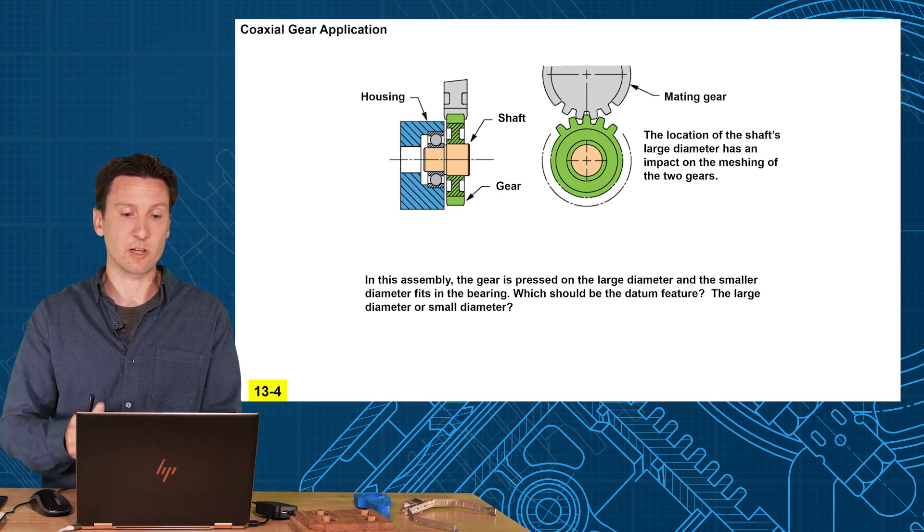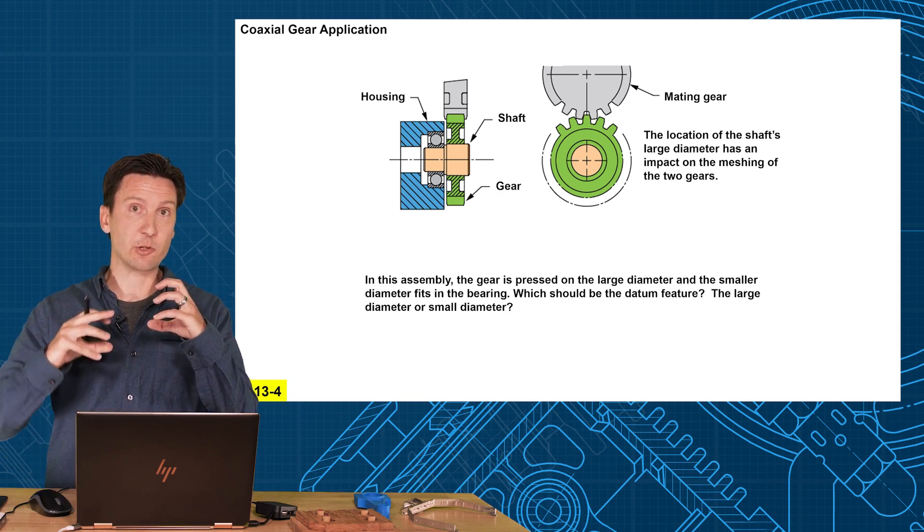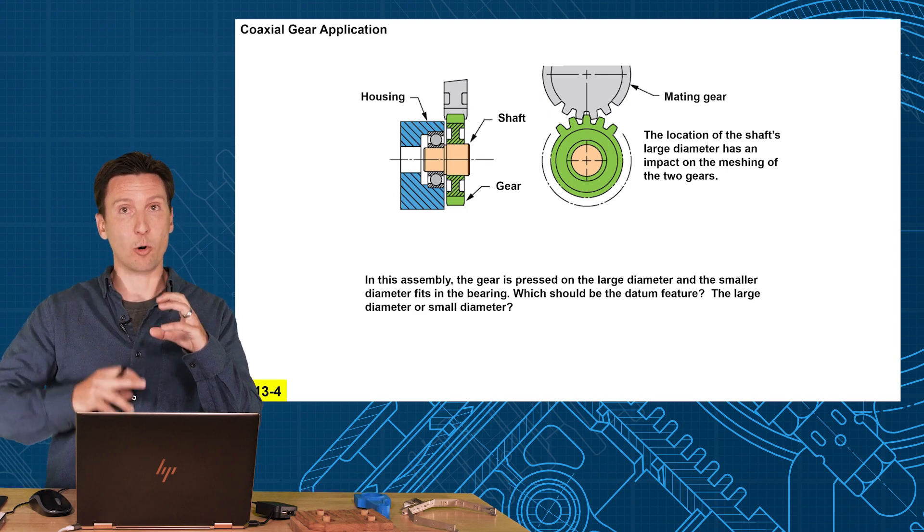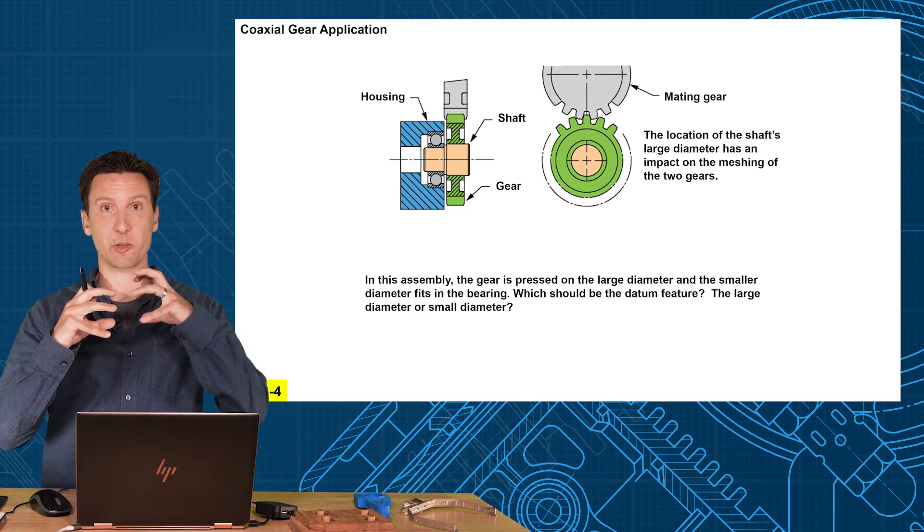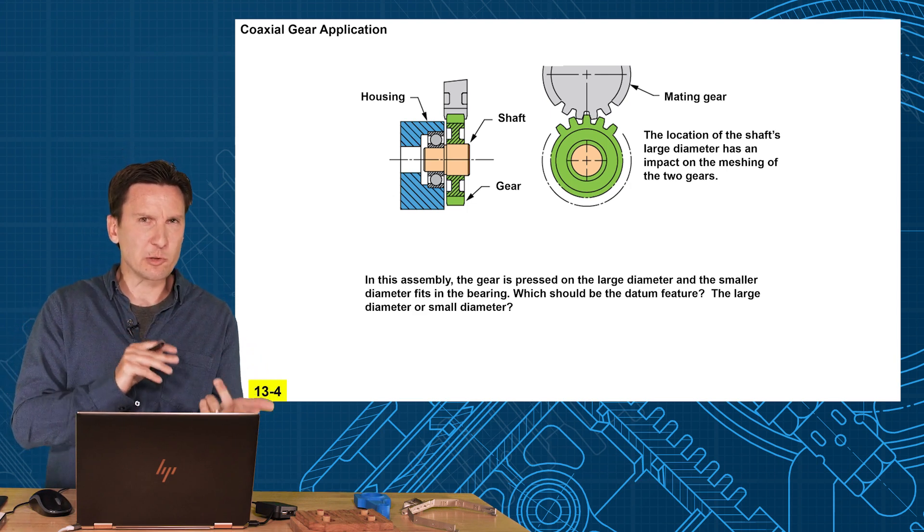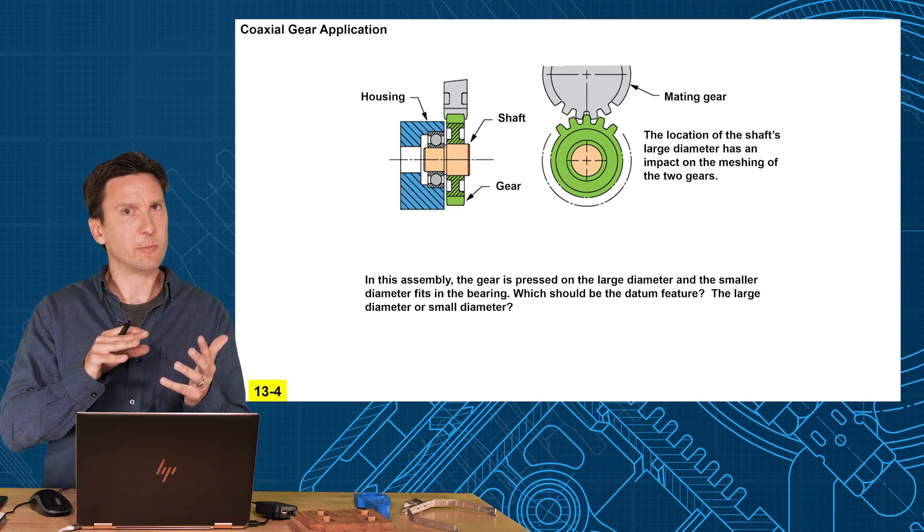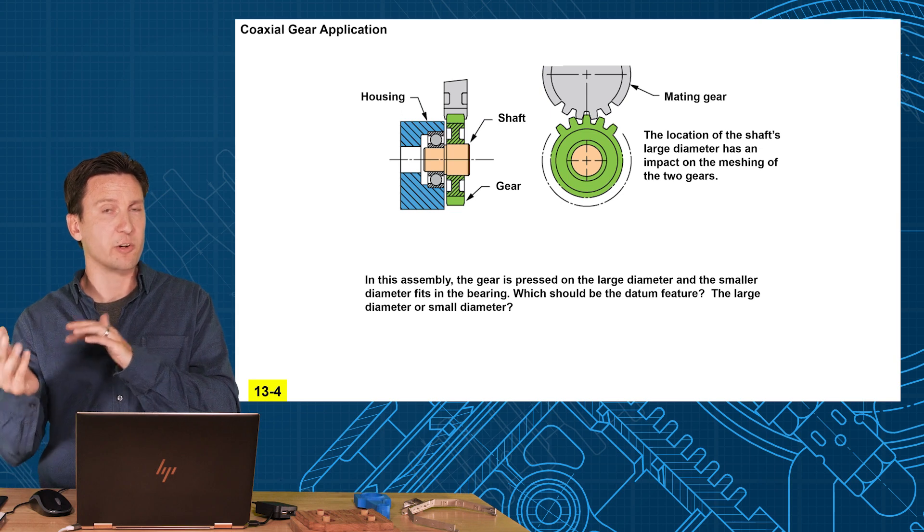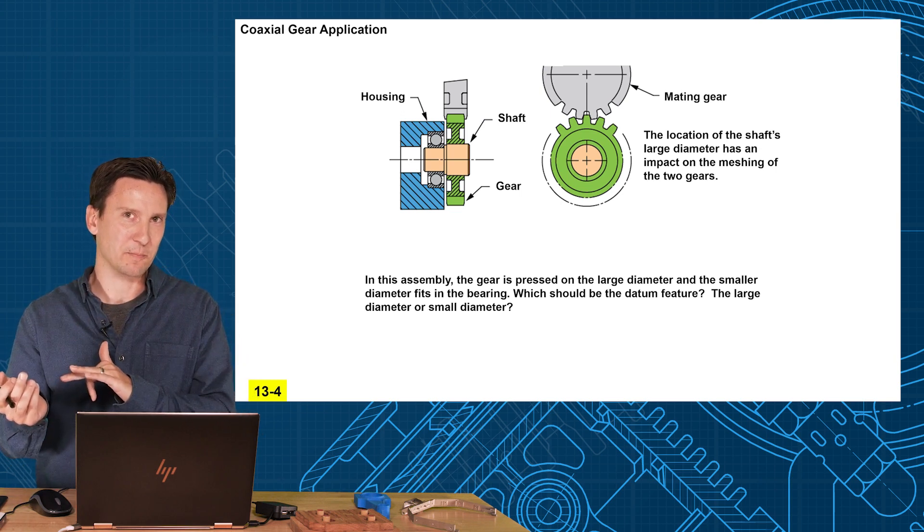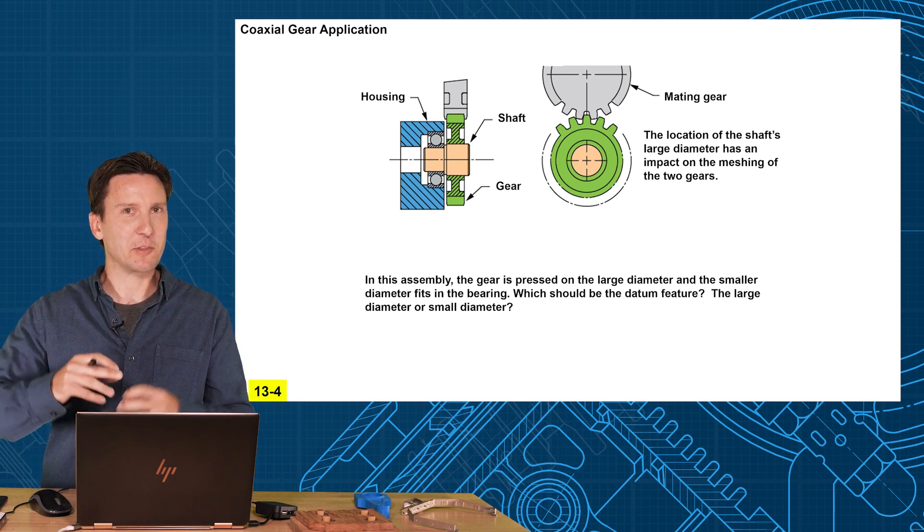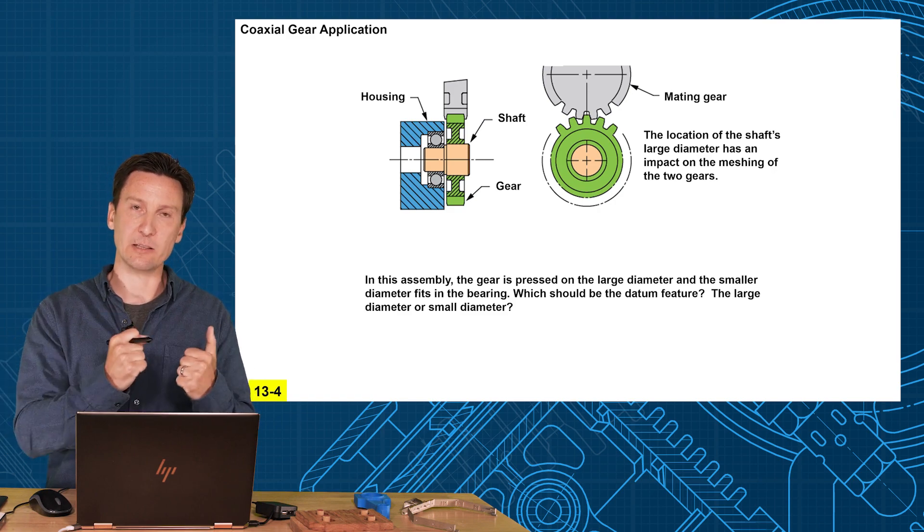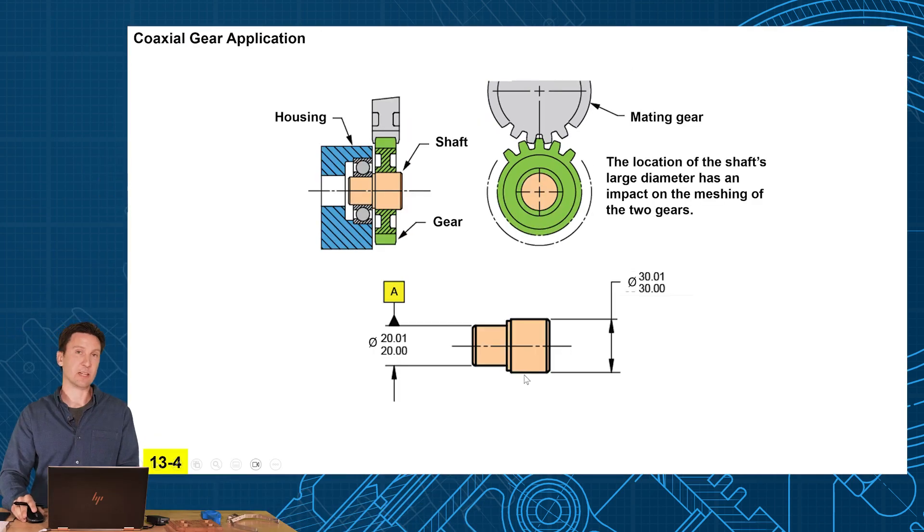We really have two choices. Do you want to select the larger diameter as our datum feature, control where the smaller one is? Or do you want to get on the smaller one and control where the larger one is? Which one is your leader? Which one is your follower? So is the gear going to determine where the housing is going to be? Or does the housing determine where the gear is going to be? And I would think most people think the bearing, the housing is our main leader and that's what I'm going to select as datum feature A. So that will create a nice axis that we're going to call zero that we're going to control the other diameter to.